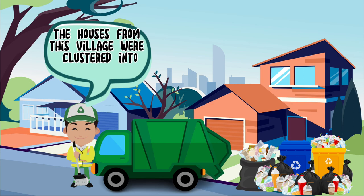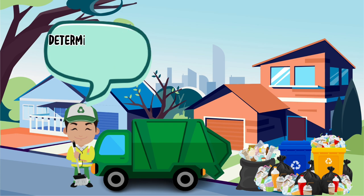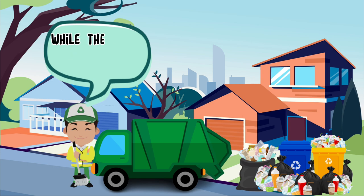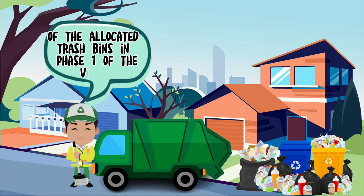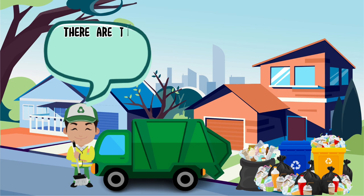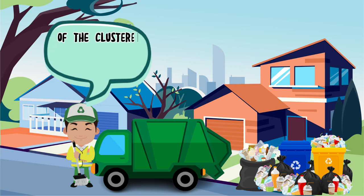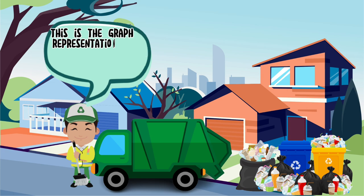The houses from this village were clustered into groups, where they have an allocated trash bin to throw their garbage, determined by the application of dominating set. This village was sectioned into two phases: phase one consists of 257 houses, while phase two consists of 193 houses. In applying the vehicle routing problem, there are two garbage trucks that will collect the garbage — the first allocated to phase one and the other to phase two. The garbage truck will go around and collect garbage from the clustered households' corresponding allocated trash bins. By applying the vehicle routing problem, this is the graph representation of the route with the least total distance that the truck should follow in the collection process.